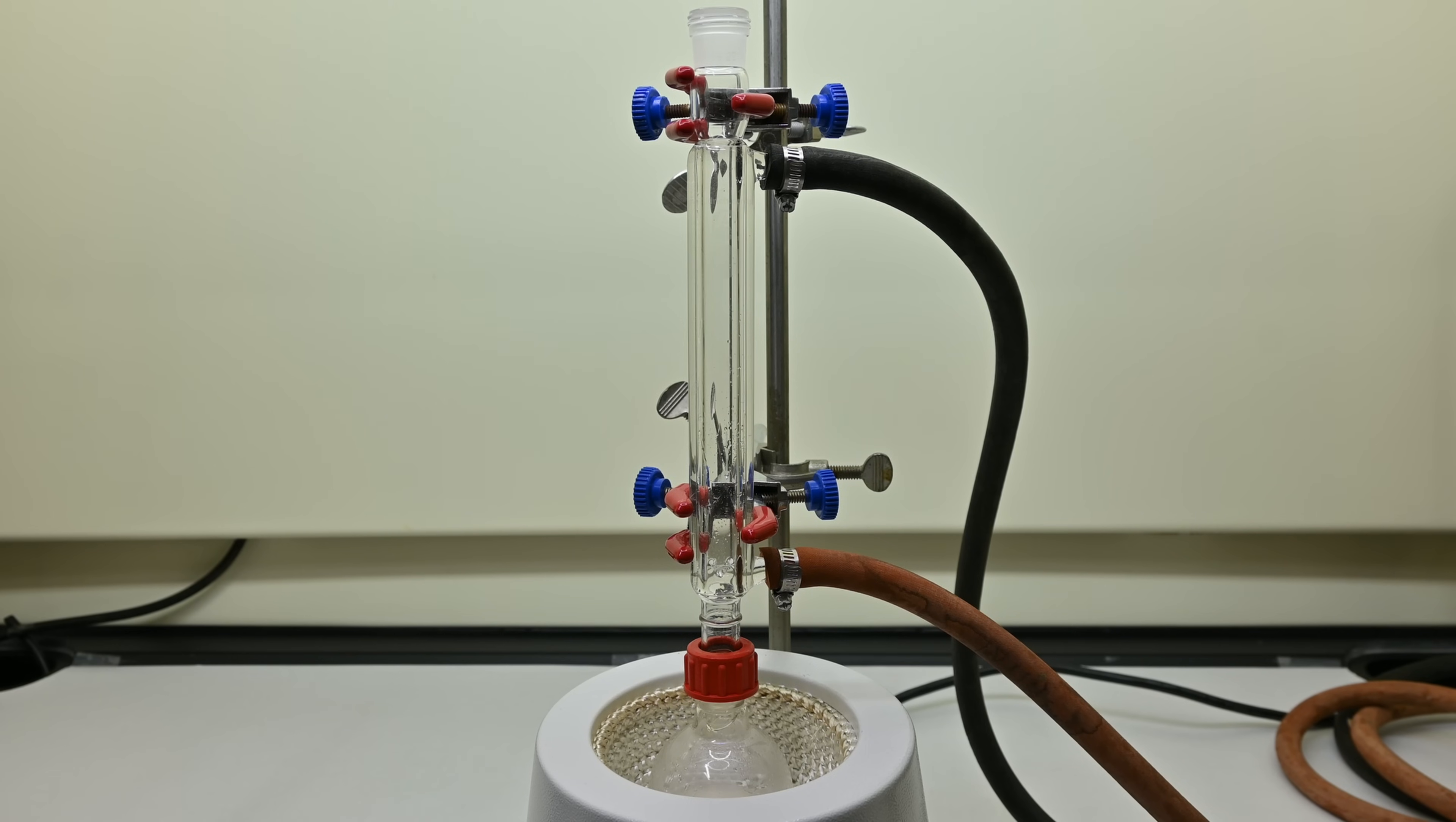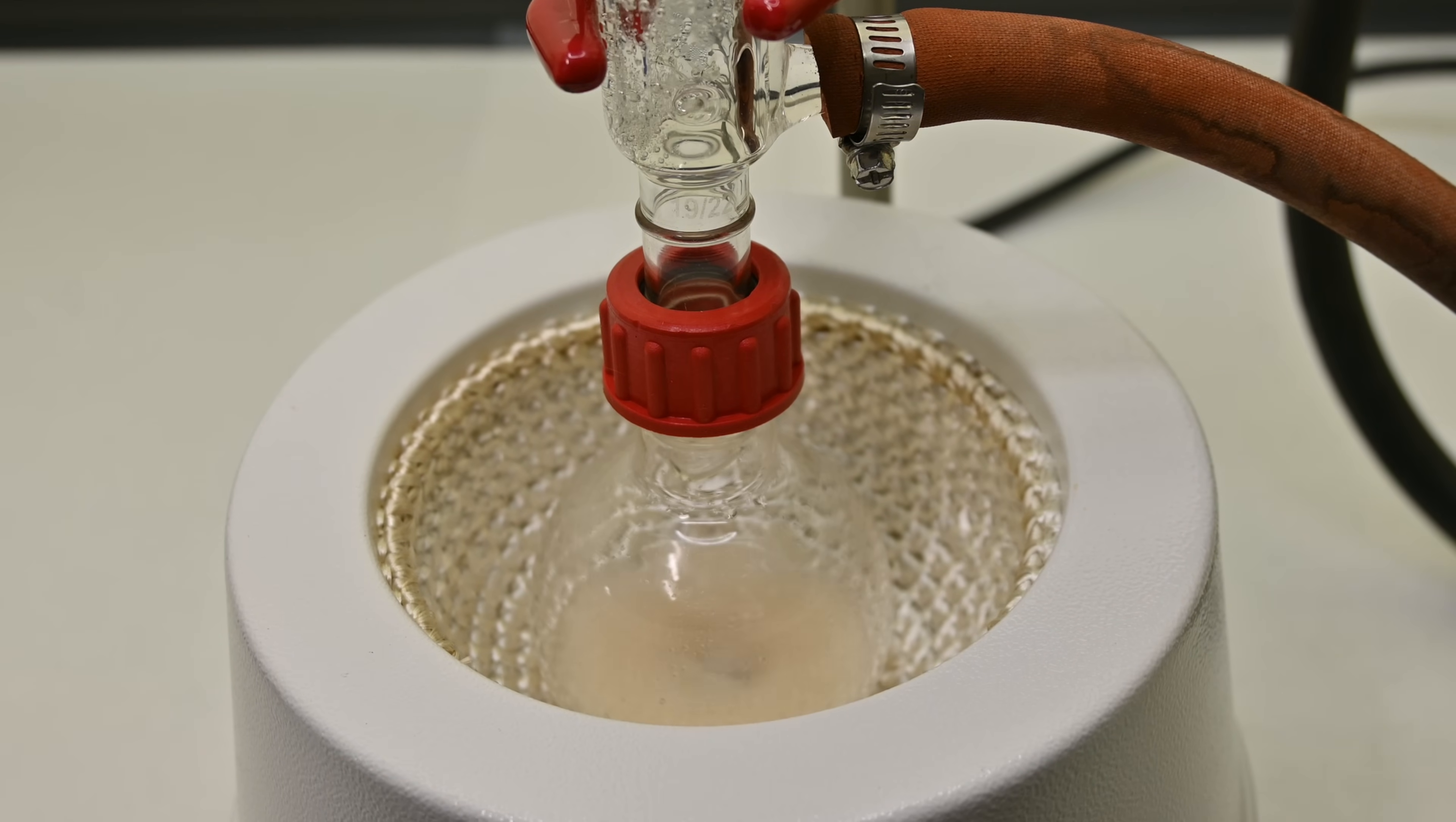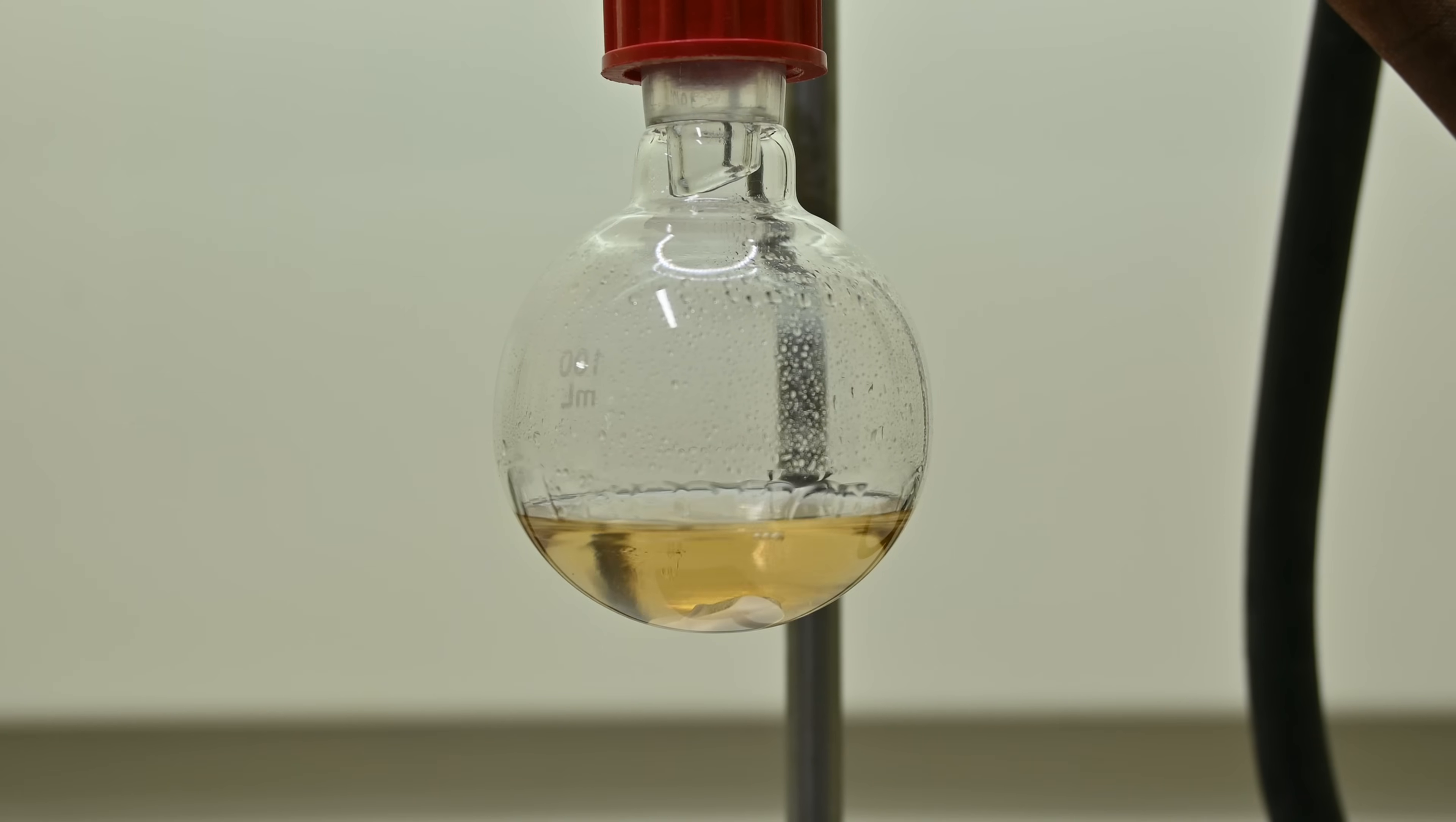Next I attach a reflux condenser to the flask and heat the mixture gently under reflux for about an hour. Refluxing allows the reaction to proceed at a high constant temperature without losing any solvent due to evaporation. The mixture continuously boils and condenses, cycling back into the flask. After about an hour I remove the heat and allow the solution to cool to room temperature.